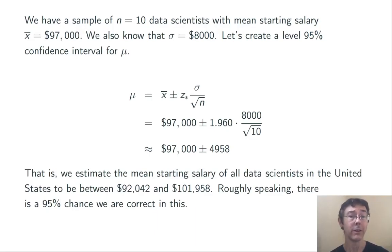Roughly speaking, we expect that the mean starting salary of all data scientists in the United States will be between $92,042 and $101,958. Roughly speaking, we expect that we'll be right 95% of the time that we go back and create such an interval using sample data.